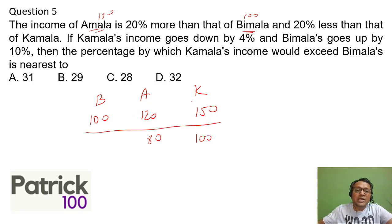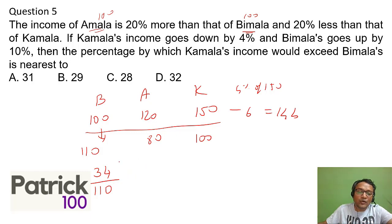So once you get these values now try to put. Now it just said Kamala's income goes down by 4 percent. 4 percent of 150 will be minus 6 which will give you 144. This is 4 percent of 150. And Bimala goes up by 10 percent, 110. So how much is the increase? 34 out of 110 is the value. The increase is 34 out of 110. You want, you can directly divide. 34, 33 is 3, 1 carry 4, 10. So you can make out 34 divided by 11, 3 is 33, 1 carry 4, 10, so it will be 30.9 something or 31 will be the answer, closest.